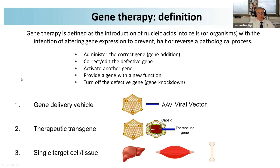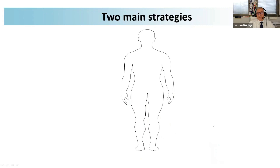The vectors we use can be different. The adeno-associated vector has a capsid and a therapeutic transgene. Importantly, each AAV serotype has a single or special target cell or tissue. So usually we use one vector for one tissue.